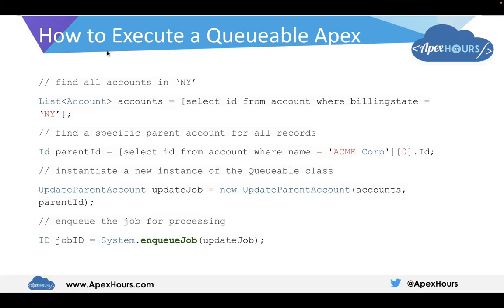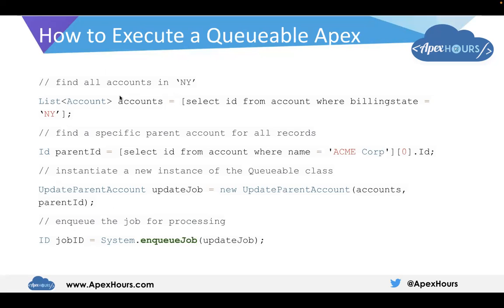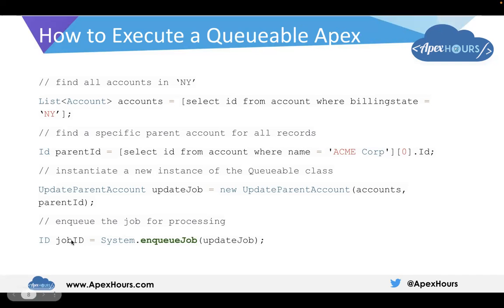Here is how to execute a Queueable Apex. We are preparing a list of accounts for this example, since the class accepts one list of Account and one ID. We prepare the list of accounts and a parentId. Then we create one instance of our Apex class. To call the Queueable Apex, you just need to type System.enqueueJob and pass your Apex class instance as the parameter. It will return you a job ID, which can be seen in the setup menu.